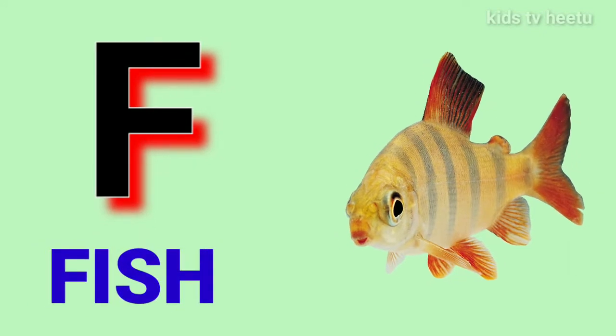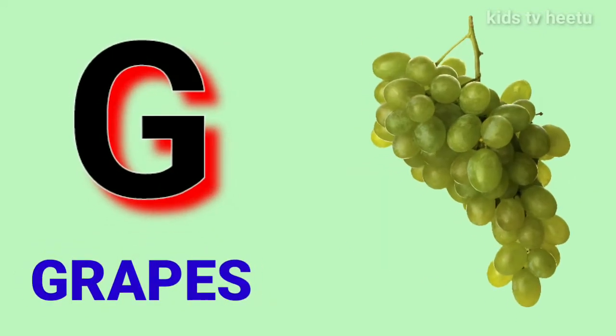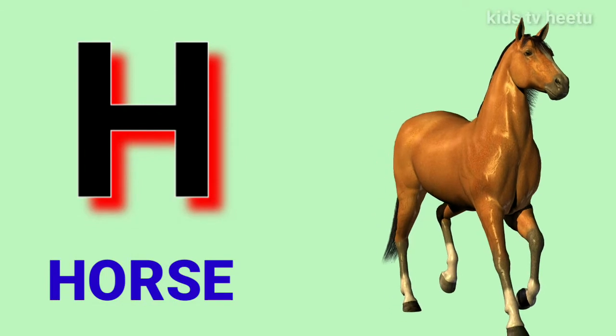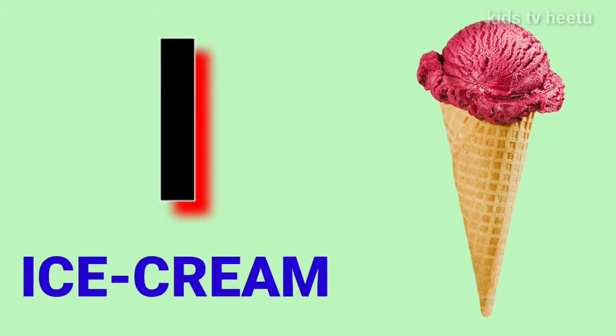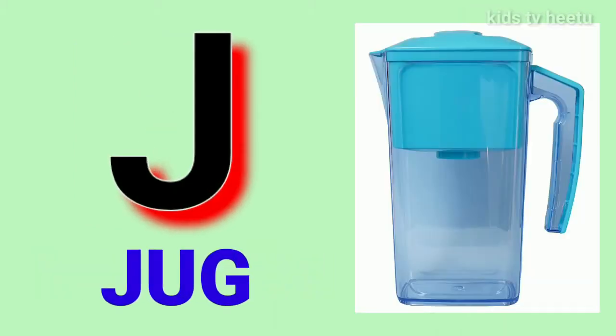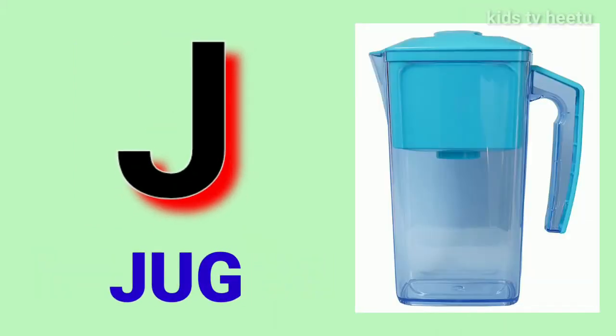L for peas, G for crabs, L for horse, I for ice cream, G for dog.